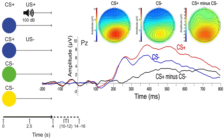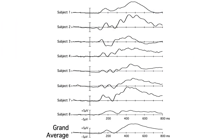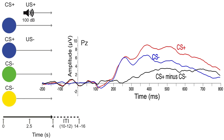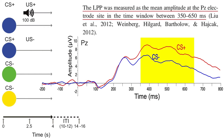Here are the scalp distributions. As usual, the LPP was largest at the PZ electrode site. We don't usually show single subject ERP waveforms in ERP papers. Instead, we take the single subject waveforms and average them together into a grand average. So these are grand average waveforms. But for the statistical analyses, Felix quantified the LPP amplitude from each individual subject's waveform, by measuring the mean amplitude between 350 and 650 milliseconds at the PZ electrode site from each subject's CS plus and CS minus waveforms.